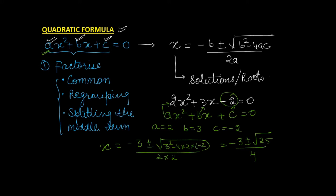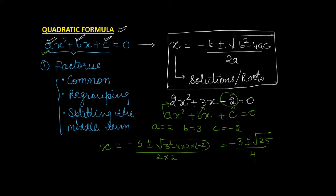In the quadratic formula, the part inside the square root — b² − 4ac — is called the discriminant, and we represent the discriminant by D. The value of D will help us determine the nature of the roots or solutions of the given equation.